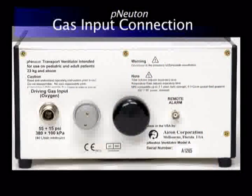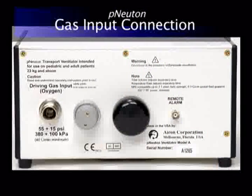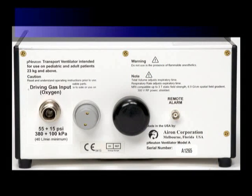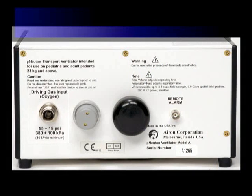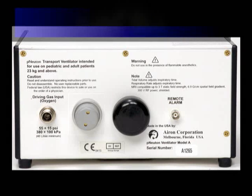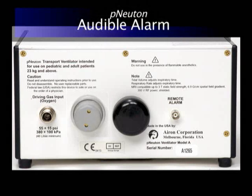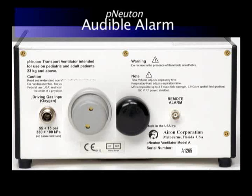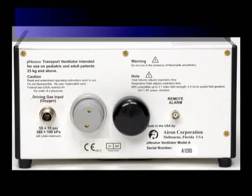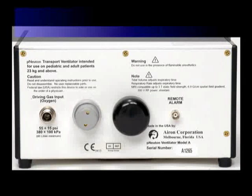Let's start with the features and controls of the rear panel. Here you have your gas input connection. It requires connection to a high-flow oxygen source of 55 psi. The audible alarm alerts when a patient disconnect has occurred or when oxygen source gas pressure drops below 30 psi.